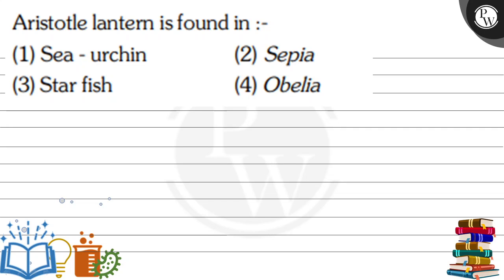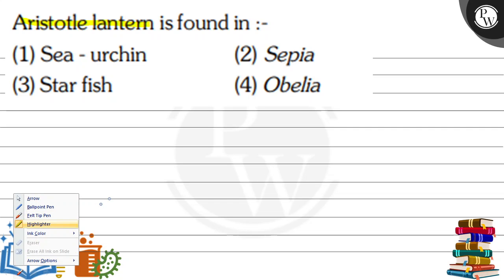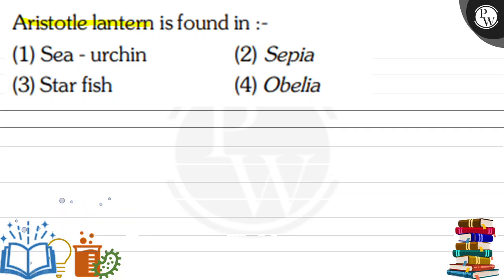Hello, let's see the question. The question is: Aristotle's lantern is found in — and the options given are: first is sea urchin, second is starfish, third is sepia, and fourth option is obelia. So let's see what is the key concept to solve this question.